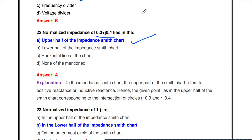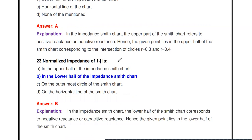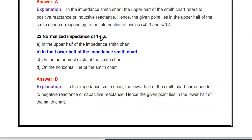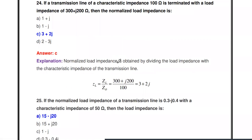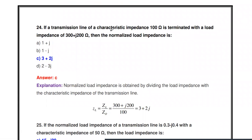Next question: The normalized impedance 1 - j: here r = 1 and x is negative, so this impedance appears on the lower half of the impedance chart. This is the point we need to mark.